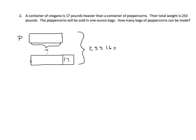How are we going to find the weight of the peppercorns? Well, the first thing we need to do is eliminate the weight of the 17 more pounds for the oregano. So we'll start with 253 and we'll subtract 17, and we get 236. Now we know that two units — these amounts right here, both of these together — weigh 236 pounds.